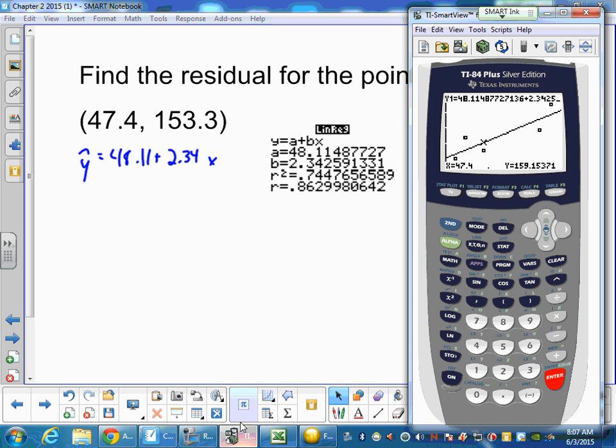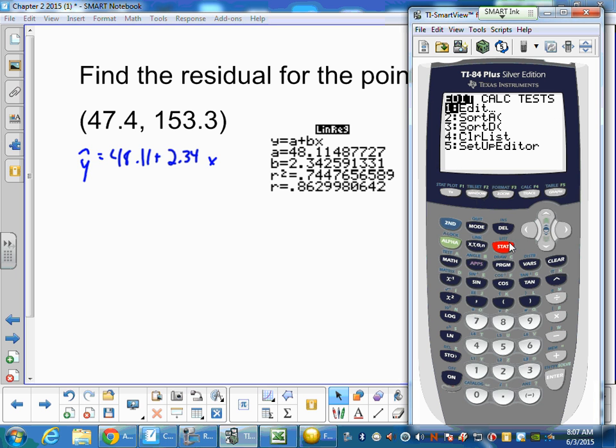Or another way to do it is once you have those values, when you do a linear regression, make sure you put in your Y1 over here. Vars to the right, enter, enter. And then when you graph it, the line is going to be over here. Now to calculate that point, if I hit second trace, which is our calculate, and just hit enter, we could type in 47.4 and we can see that point's there.